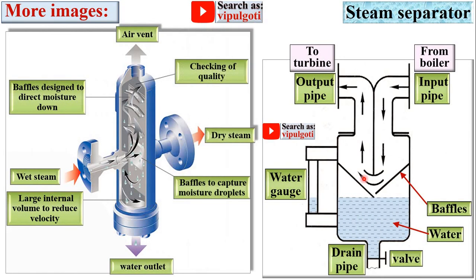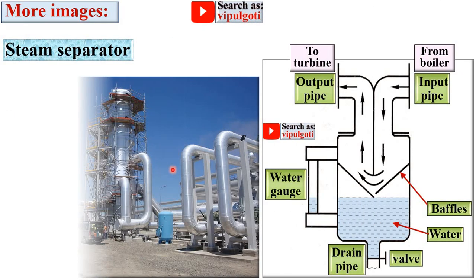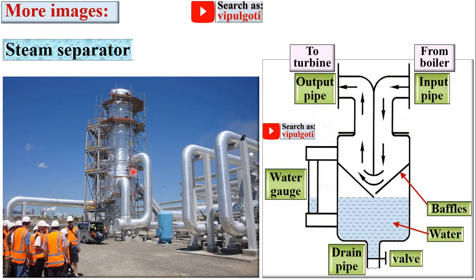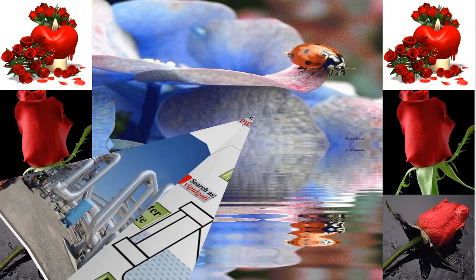More images of the steam separator. This one is the model of the steam separator — here the wet steam is supplied as input. With the help of these baffles the water droplets are collected at the bottommost part and periodically discharged with drain valves, and from here you can collect the dry steam. Here is a real image of the steam separator in a power plant. If you want to see more engineering videos, subscribe to my YouTube channel and go to the playlist. Please press the like button to appreciate this video.